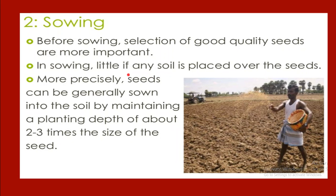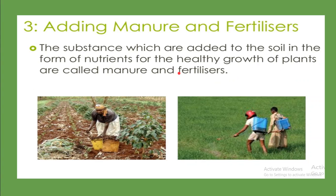The second practice is sowing. Before sowing, selection of good quality seeds is very important. Seeds are generally sown into soil by maintaining a planting depth of about two to three times the size of the seeds. This is how we need to maintain proper depth when sowing seeds.